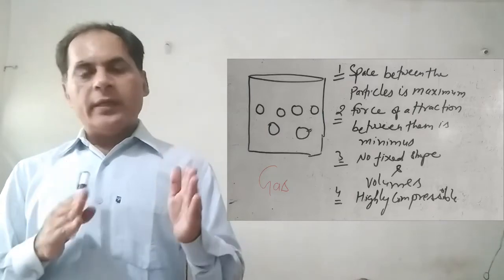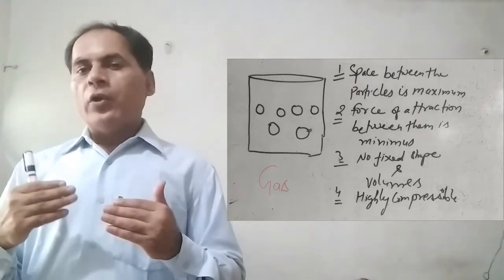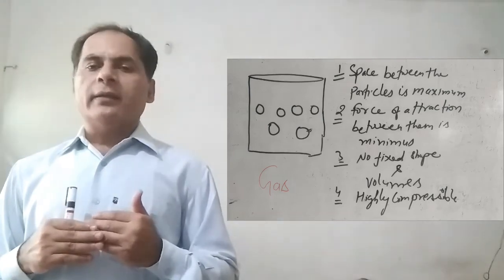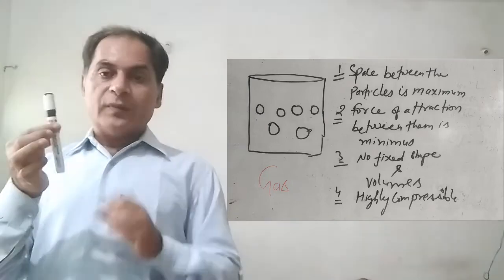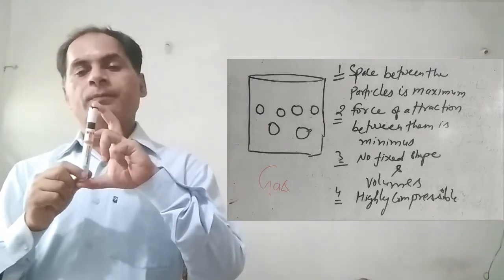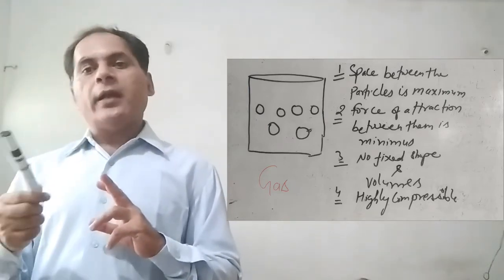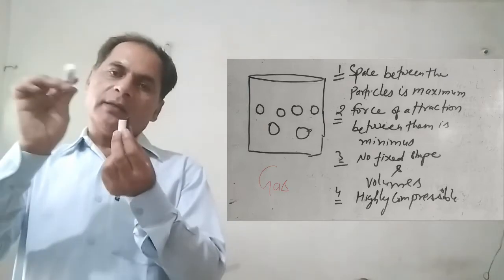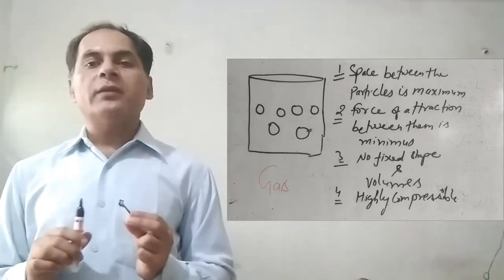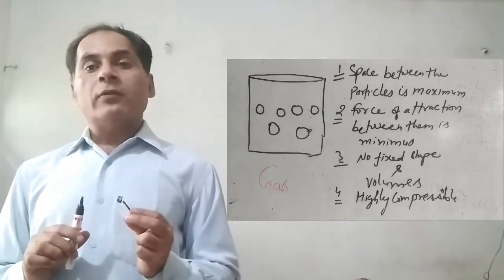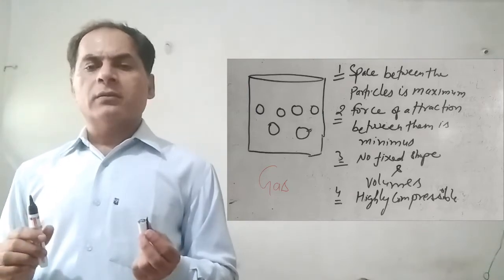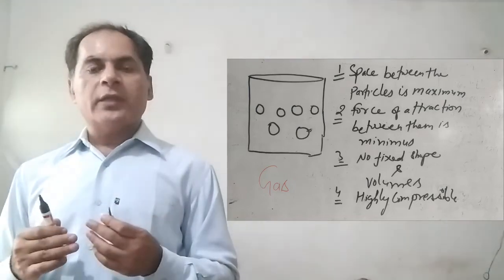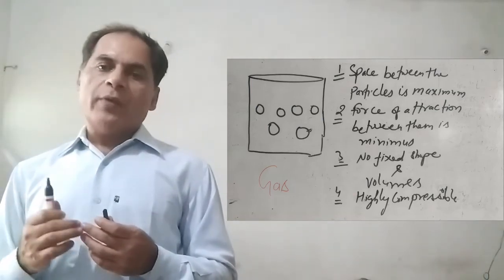Intermolecular space and force of attraction are clear. Now we will talk about volume. The volume of the gaseous state is not fixed — it changes according to the container. If we fill the gas in one container, the volume of the gas will be that much. If we take the same gas in another container or compress it at high pressure, the volume changes — it is not fixed. The shape is also not fixed. Gas can be filled in a balloon or in any container, and it will occupy that shape.